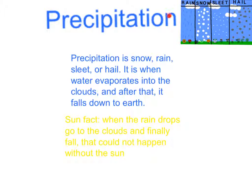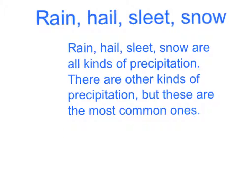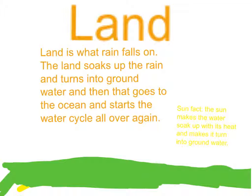Here is a picture I got off the internet of the kinds of precipitation: rain, hail, sleet, and snow. Rain, hail, sleet, and snow are all kinds of precipitation. There are other kinds of precipitation, but these are the most common ones.